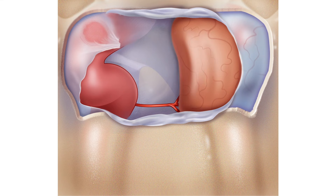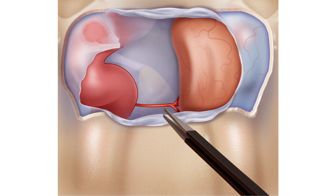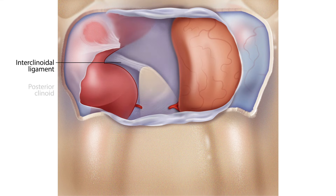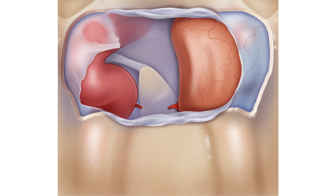During this process, it is important to identify and typically coagulate and transect the inferior hypophysial artery. At the end, we can achieve a complete tumor resection, including a complete removal of the medial wall of the cavernous sinus, which makes a significant difference in patients' outcome, especially for functional pituitary tumors.